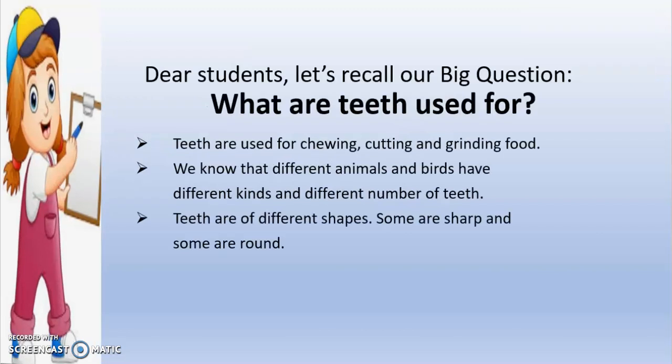First, let us recall our big question: What are teeth used for? We have seen in Chapter 3 that teeth are used for chewing, cutting and grinding food. We have also seen that different animals and birds have different kinds and different numbers of teeth. Teeth are of different shapes — some are sharp and some are round.